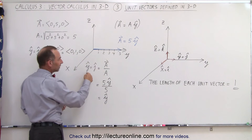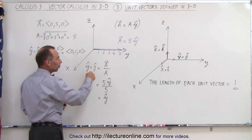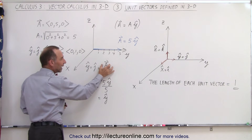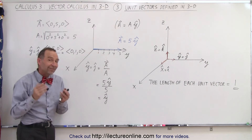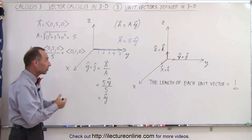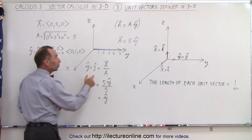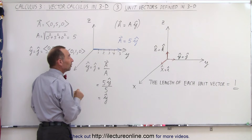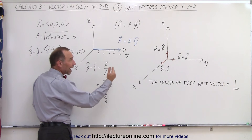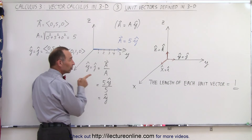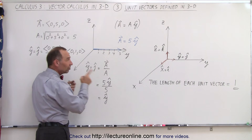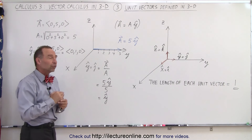If we want to calculate what the y-unit vector — or the j-unit vector — is, we take the vector and divide it by its magnitude. That's essentially the definition of a unit vector: a unit vector is equal to a vector divided by its magnitude. In this case, the three directional unit vectors i, j, and k are vectors pointing in the x-direction, the y-direction, and the z-direction, divided by their magnitude.